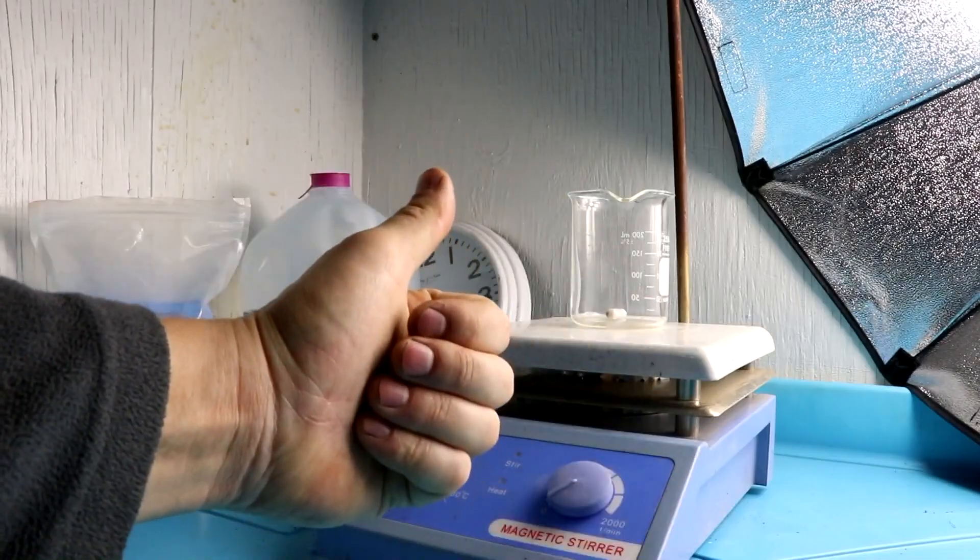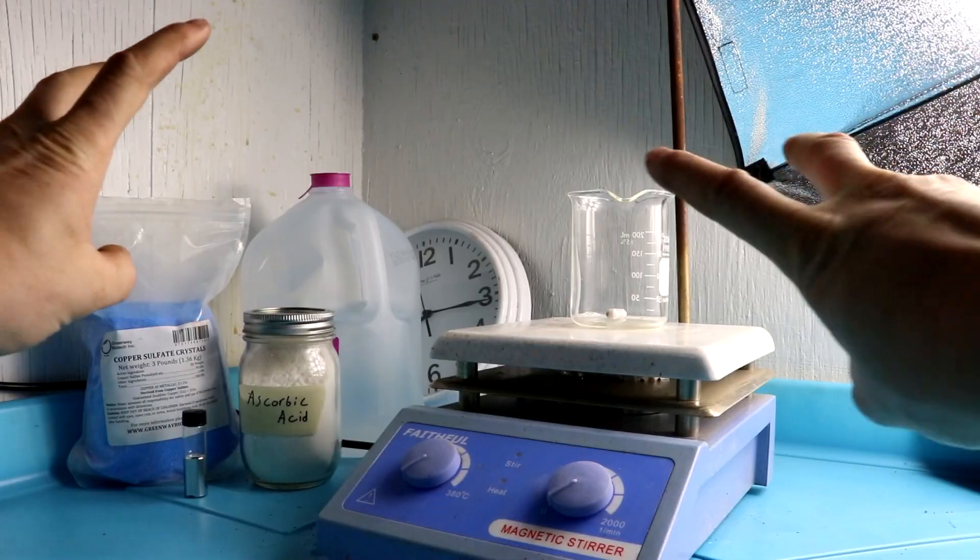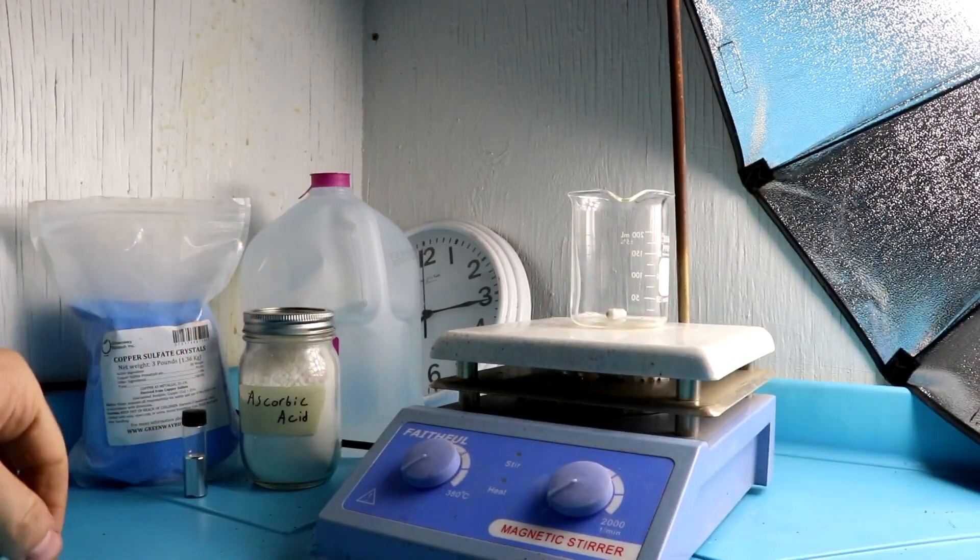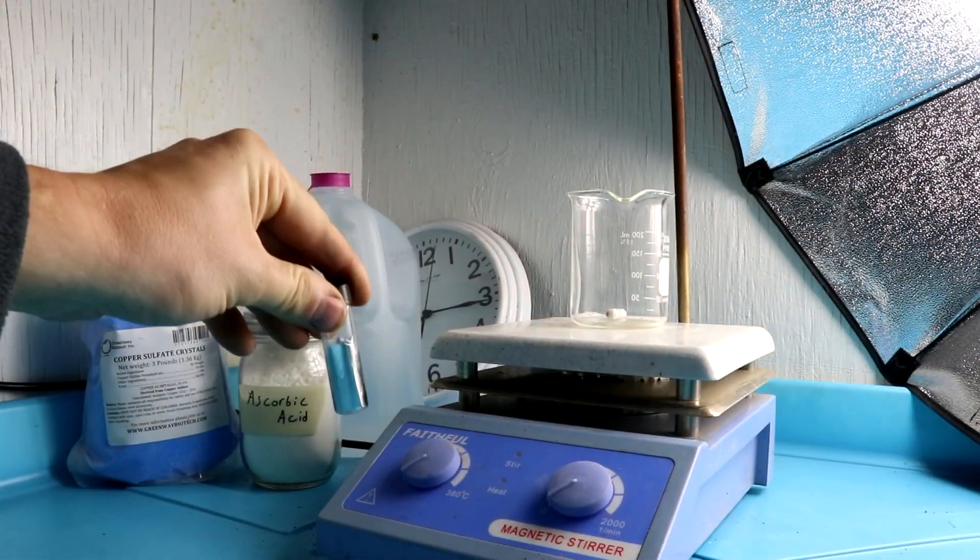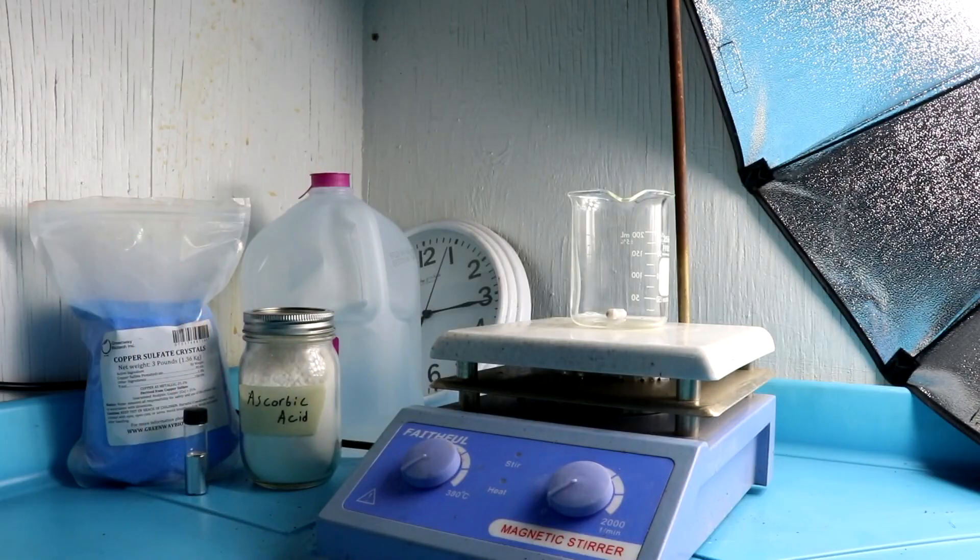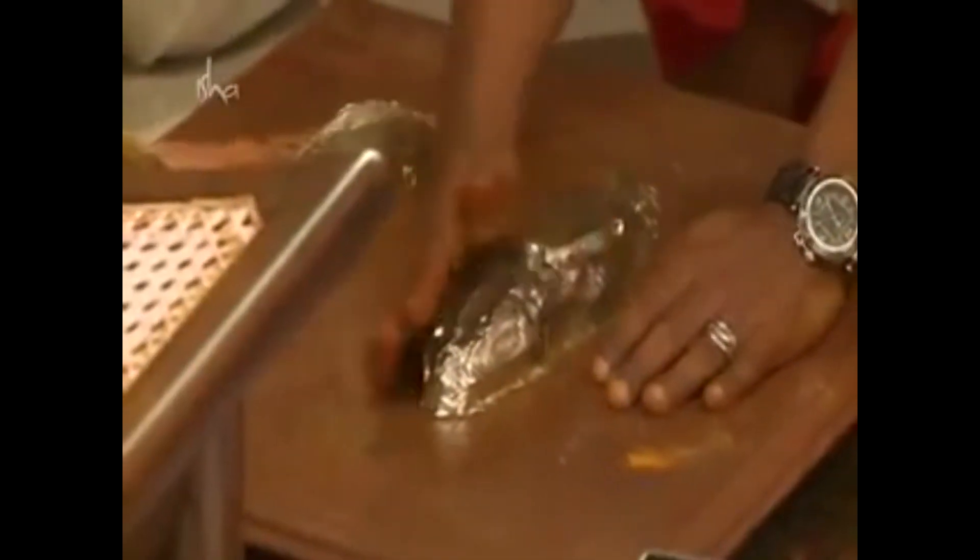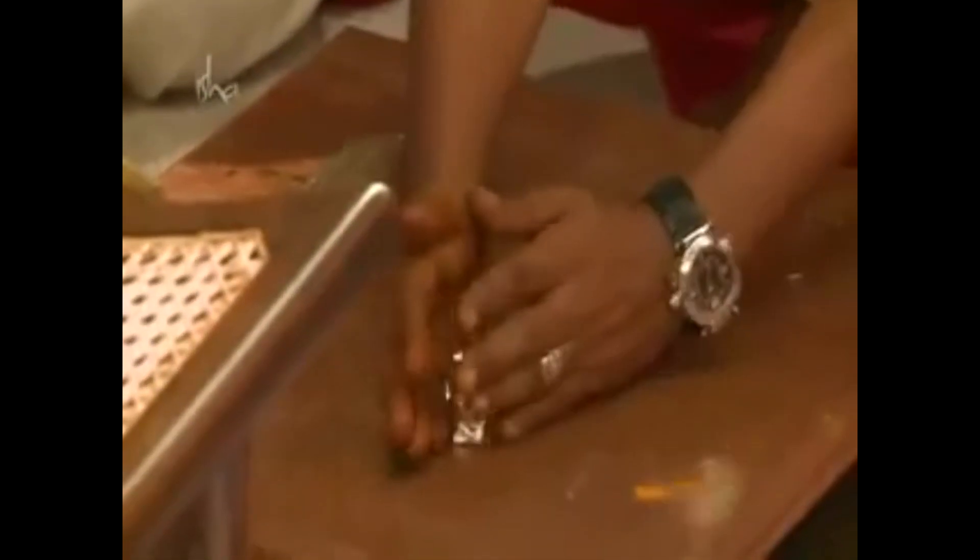Alright everyone, welcome back to Cody's Lab. So today I'll perform the miracle of turning liquid mercury into a solid at room temperature. So what you're witnessing is a miracle because according to modern chemistry you cannot solidify mercury. At room temperature it's just impossible to do it.